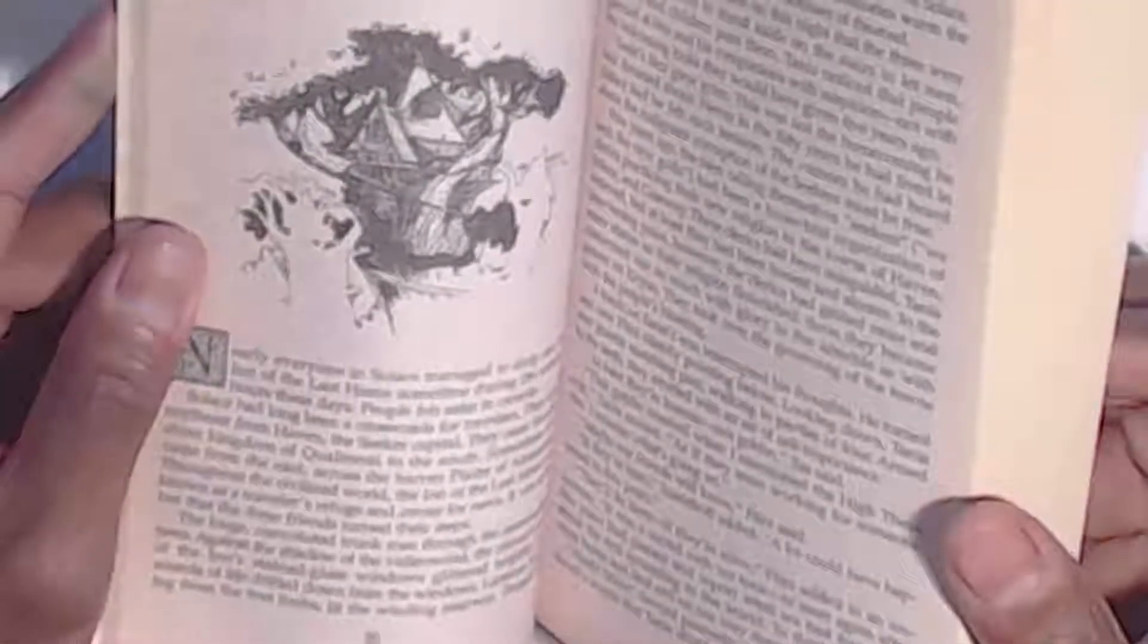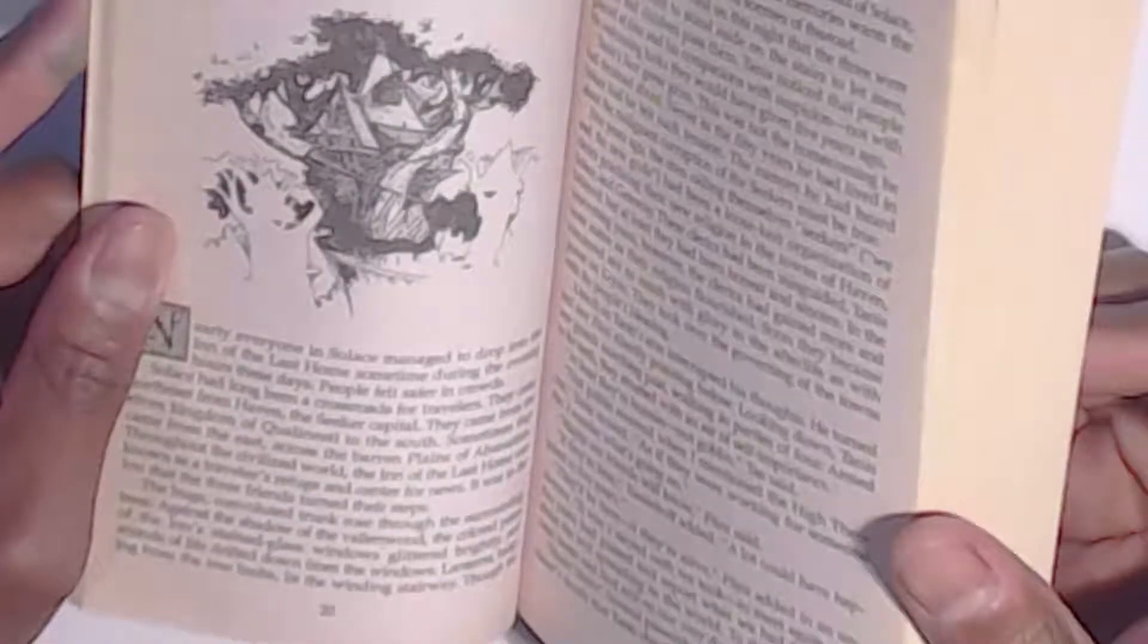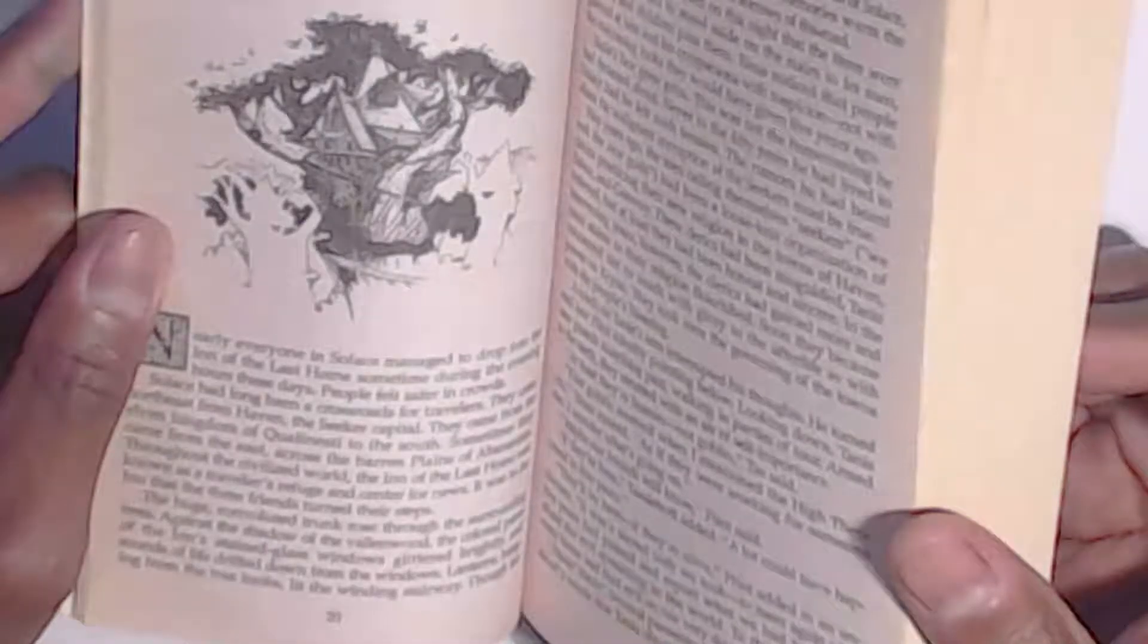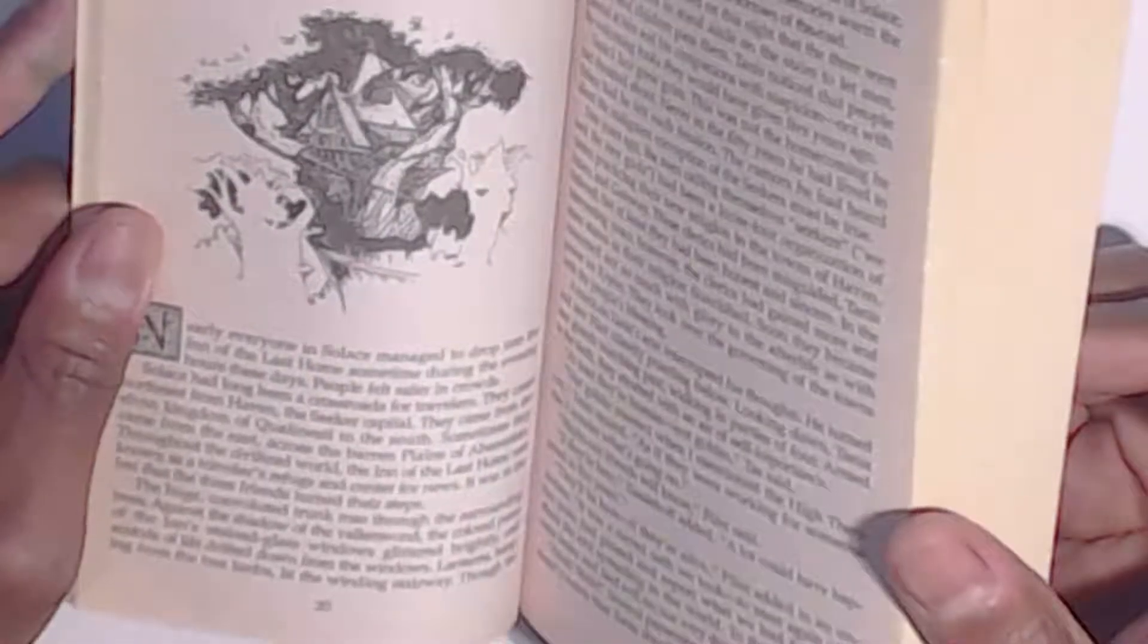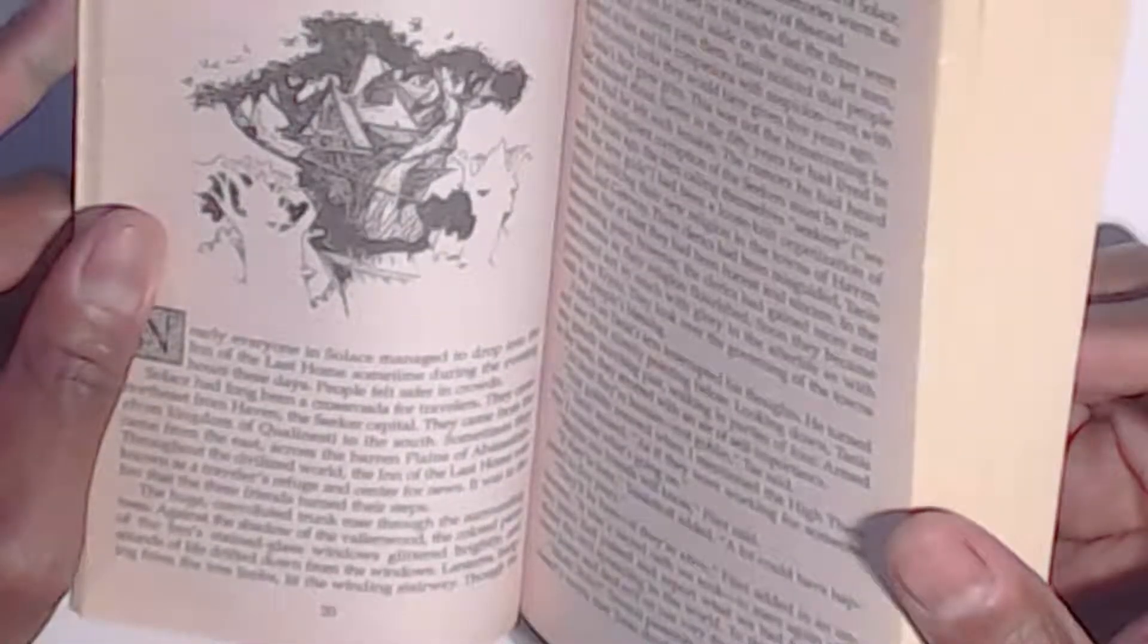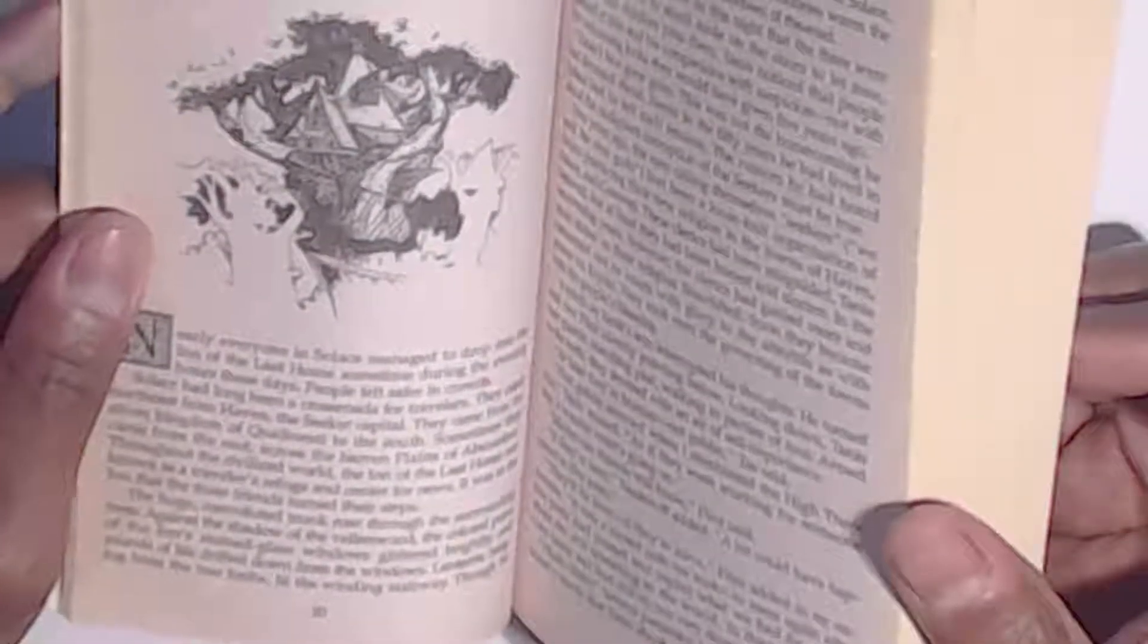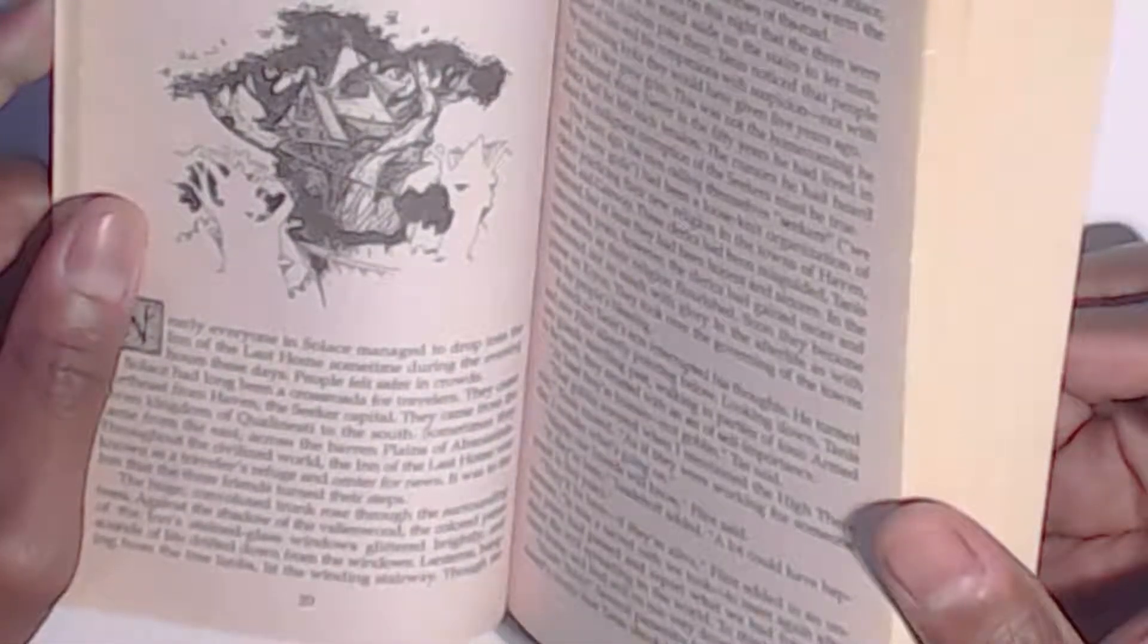Nearly everyone in Solas managed to drop into the Inn of the Last Home sometime during the evening hours these days. People felt safer in crowds. Solas had long been a crossroads for travelers. They came northeast from Haven, the secret capital. They came from the elven kingdom of Quallanesti to the south. Sometimes they came from the east, across the barren plains of Avanasenia. That's hard to say. That's a lot of vowels.